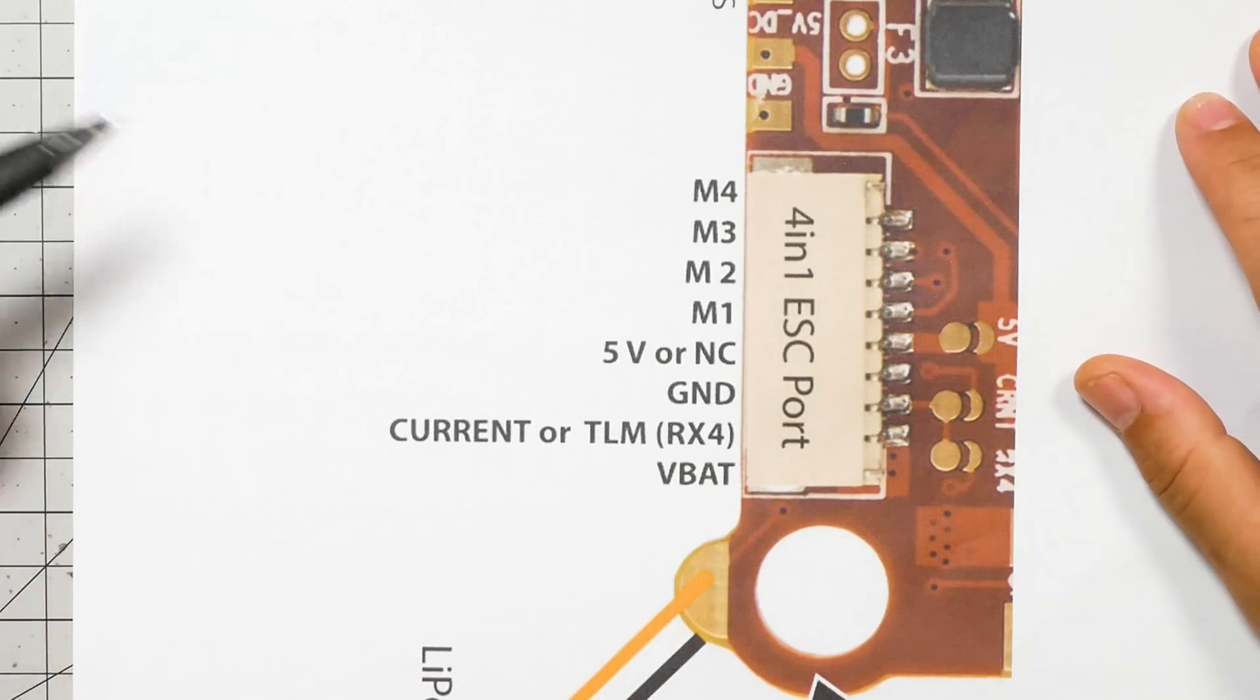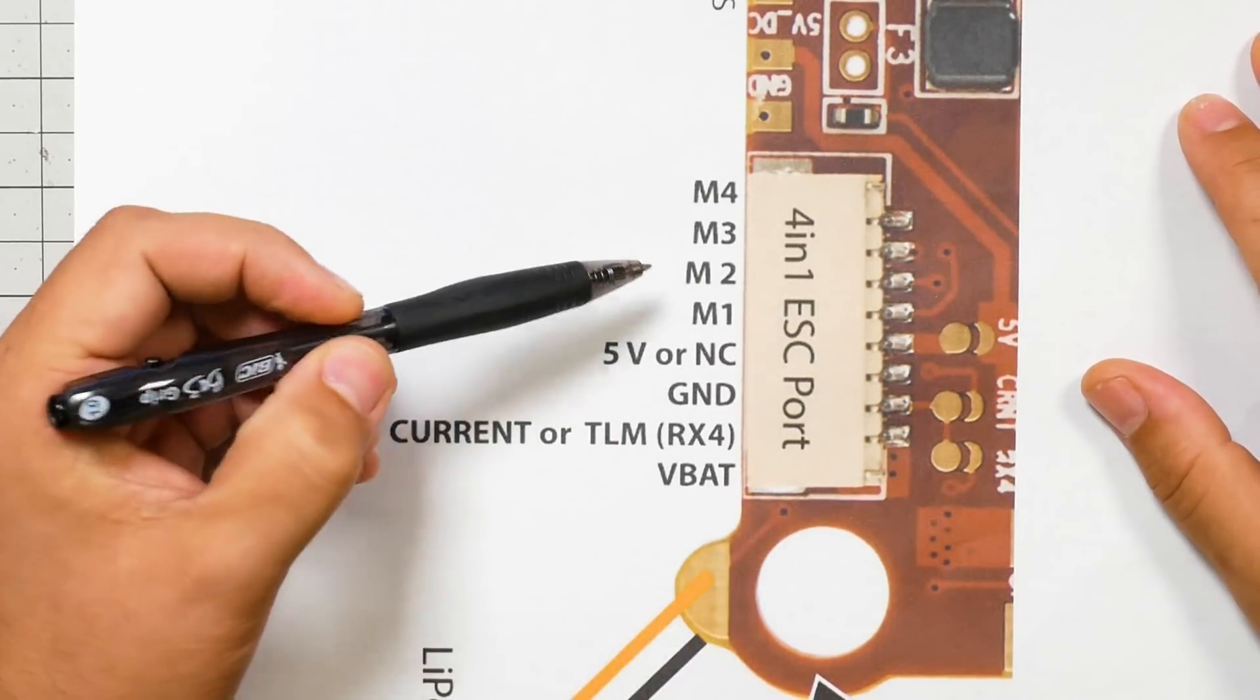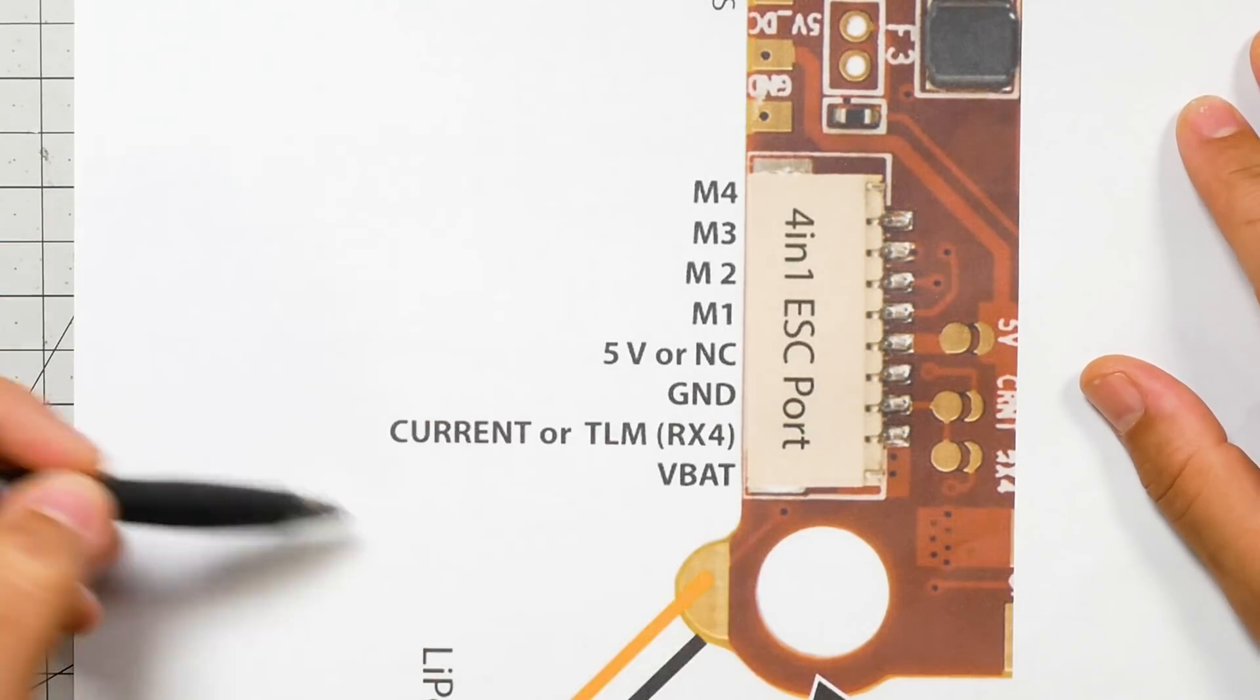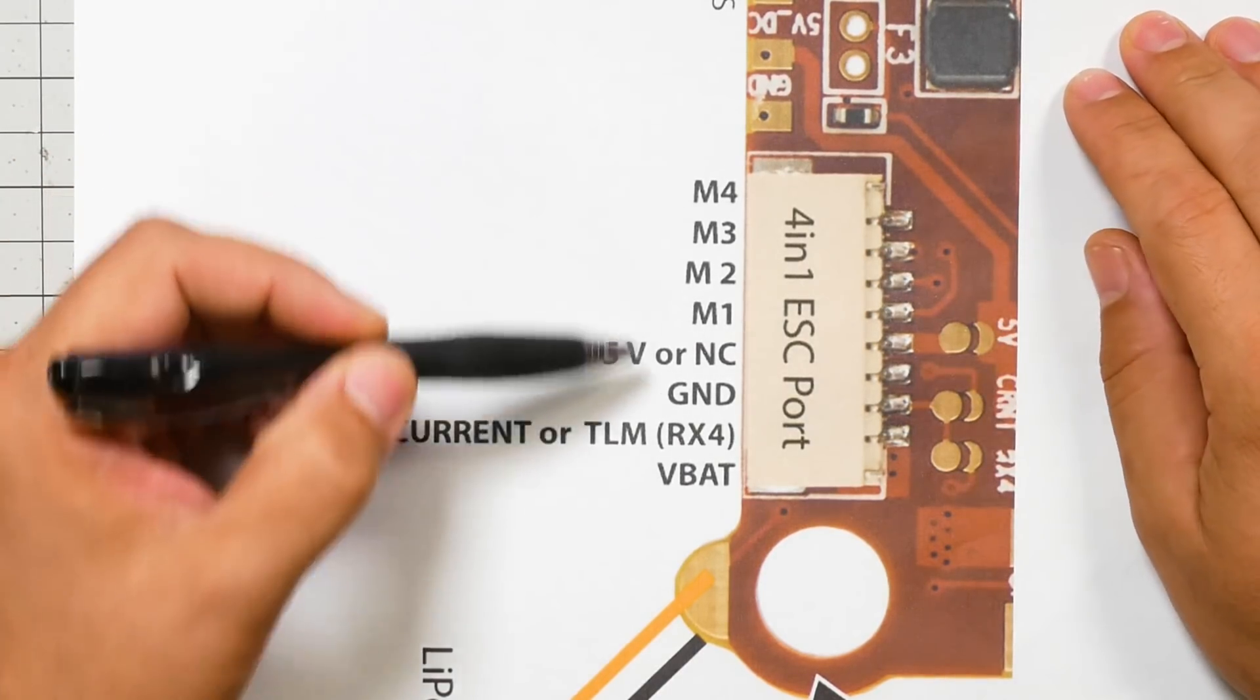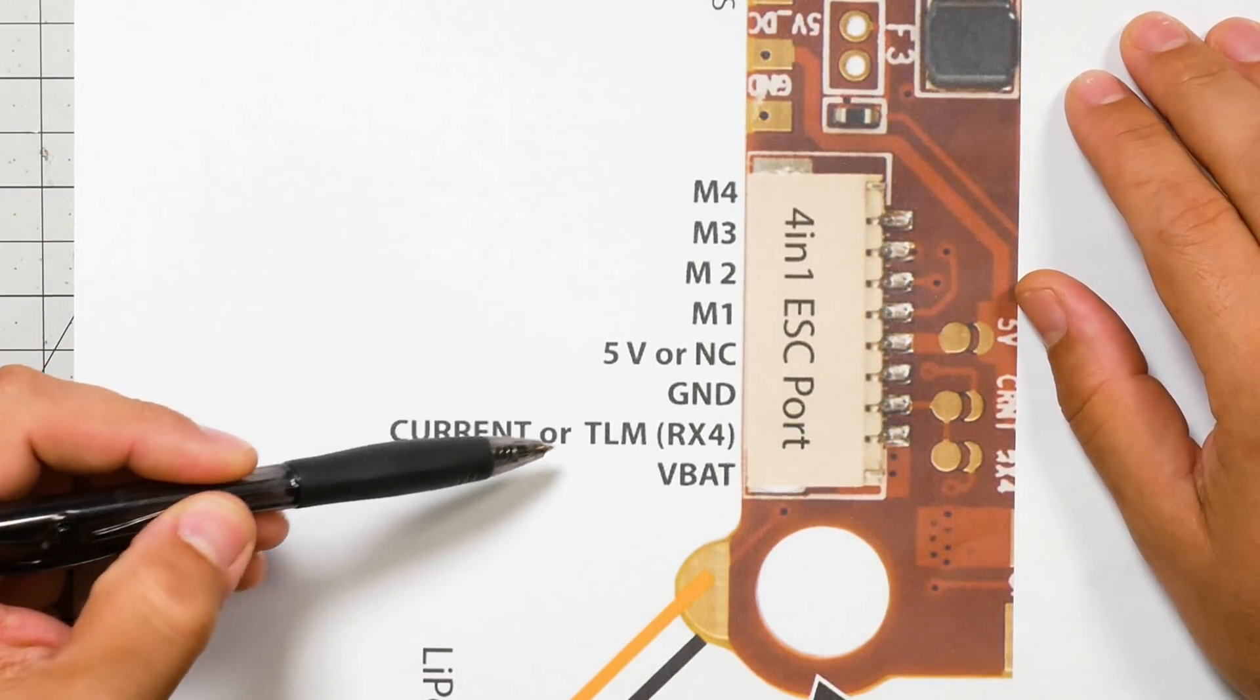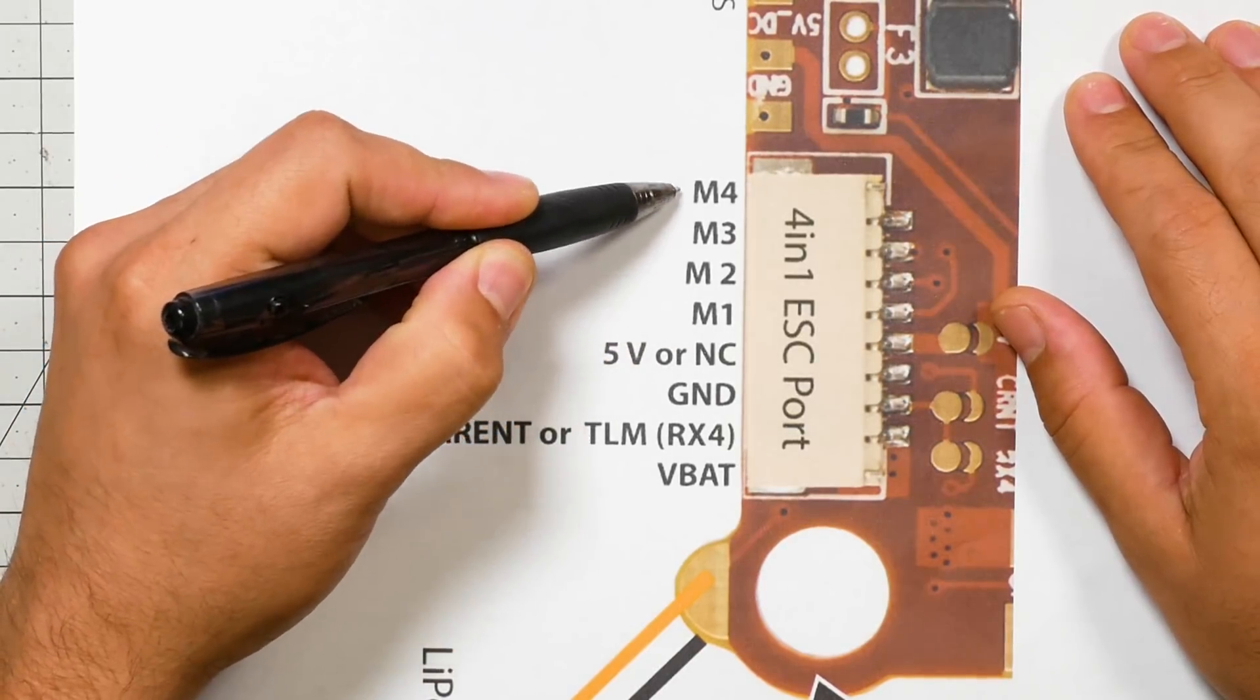So what I've got here is a printout of the pinout diagram for the Heliospring 4-in-1 ESC plug. Thanks to Philip Seidel who made this diagram. I just did a Google search for Heliospring pinout and found this pinout for the board. So what I'm going to do is look and see what's in the board. Here are motor 1, 2, 3, 4. These are the motor signals.